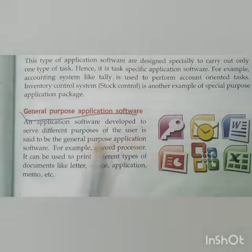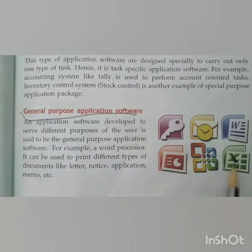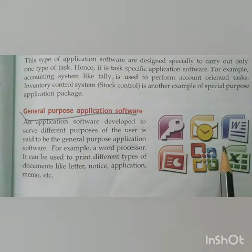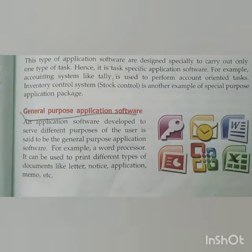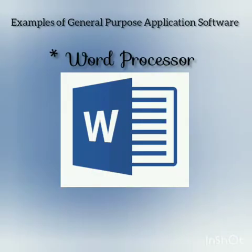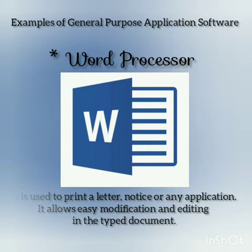Now let's look at the next category: general purpose application software. An application software developed to serve different purposes of the user is called general purpose application software. These kinds of softwares are specially designed to carry out a variety of tasks and fulfill the requirements of a person or an organization. The first example of general purpose application software is the word processor, which is used to print letters, notices, or any document. It also allows easy modification and editing of typed documents.